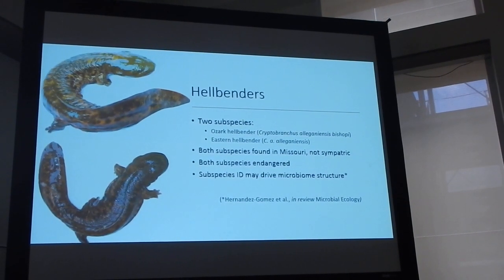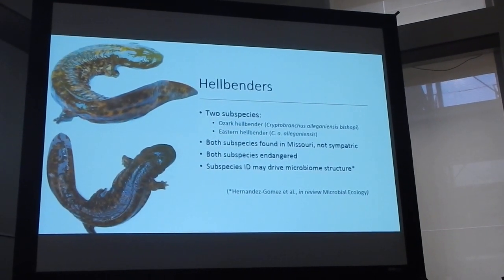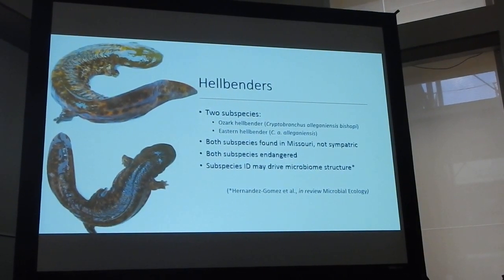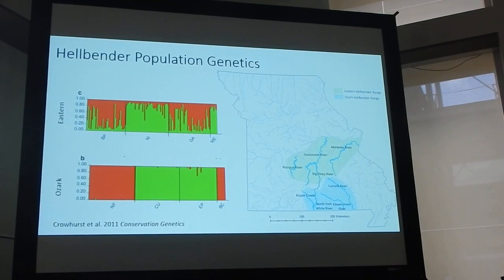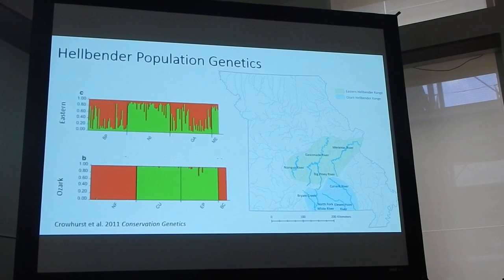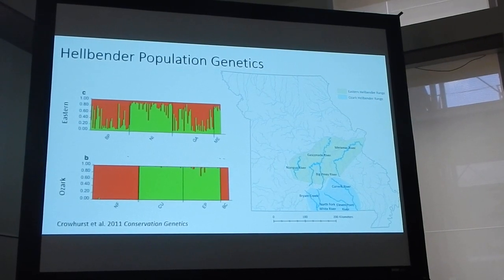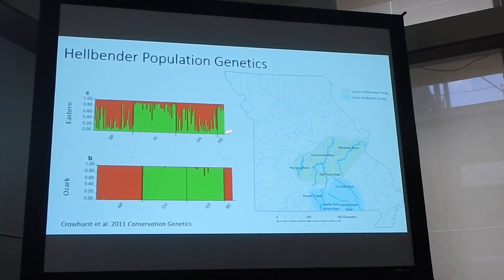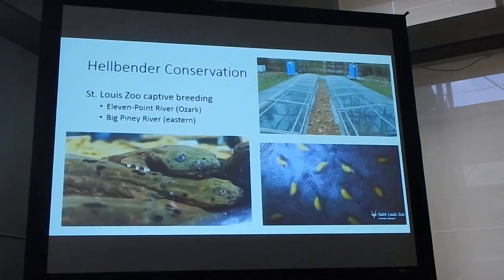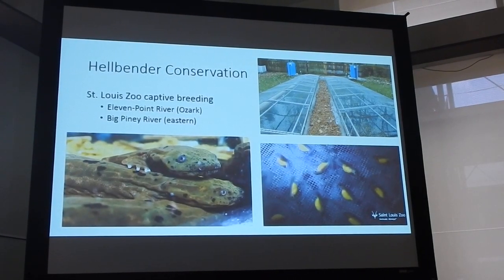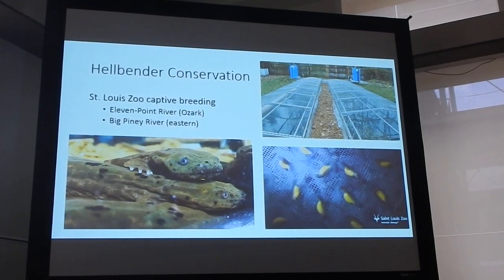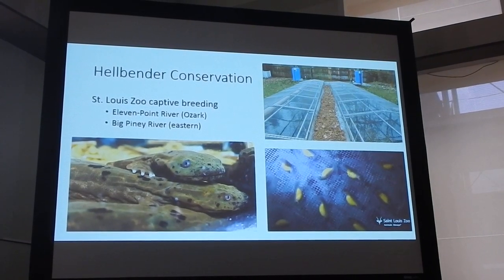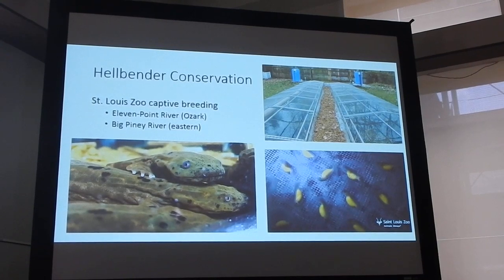In a previous study that I performed for my first PhD chapter, I saw that subspecies identity could be a driver of the microbiota structure of these salamanders. A population genetic study done on hellbenders in Missouri found that within both subspecies, there is a population structure between the western and eastern rivers within the state. At the same time, Missouri is working hard on conserving the species through a captive breeding program at the St. Louis Zoo, where they collect eggs from the wild or from individuals in artificial rivers, raise them, and release them to supplement declining populations.